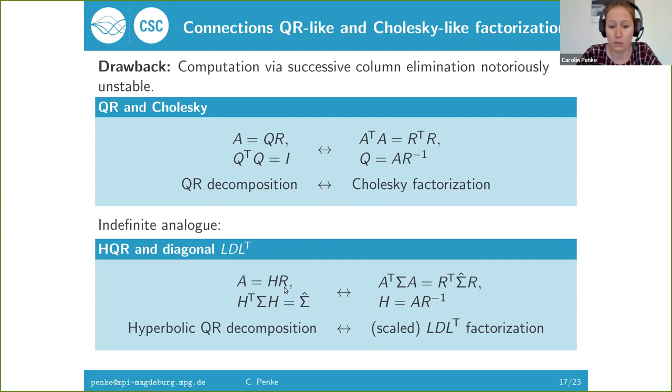In the indefinite setting, we have a similar analogy. The hyperbolic QR decomposition is related to the diagonal LDLT decomposition in the same sense. If you have the hyperbolic QR decomposition, R does give you a scaled version of the LDLT factorization. And the other way around, if you have a scaled LDLT factorization, you can transpose it and call it R. Use it to compute a matrix H, which will fulfill this orthogonality property which we need.